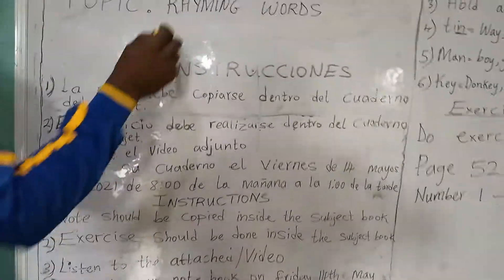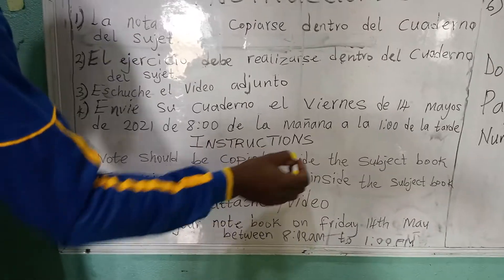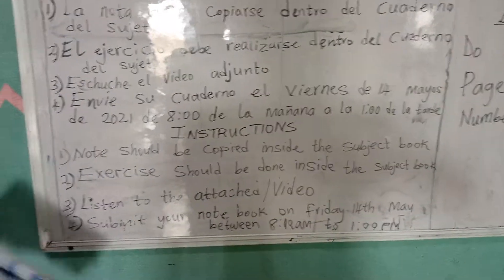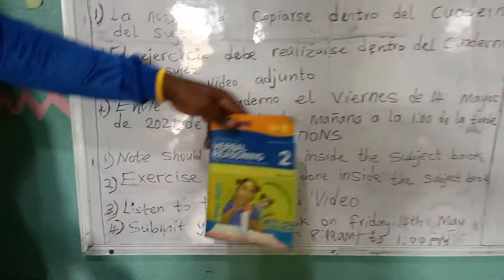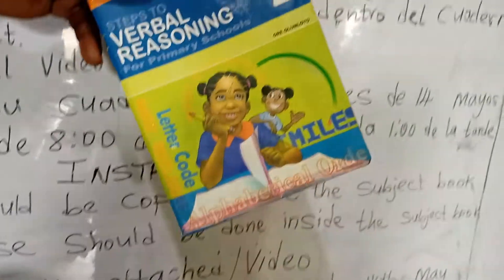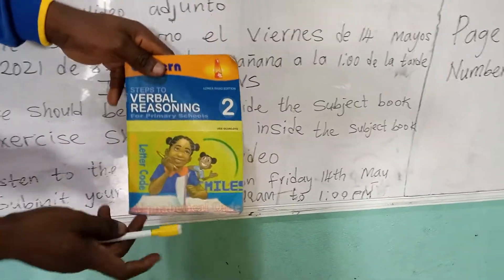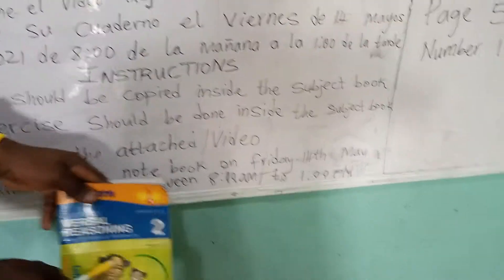Before we look at this topic, rhyming words, we are going to follow some instructions. In these instructions, all your exercise will be done inside this book. You listen to the attached video carefully. You submit this book on Friday, the 14th of May between 8 a.m. to 1 p.m. Now, let's go to the topic.